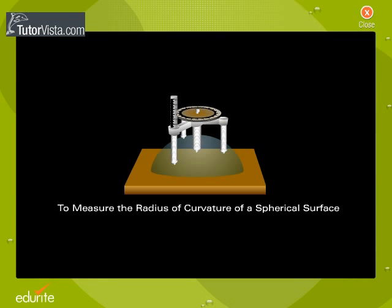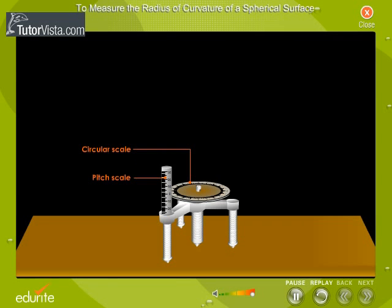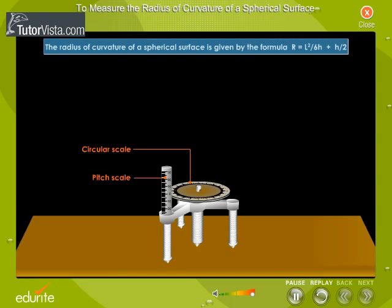To measure the radius of curvature of a spherical surface. Let us now find out how a spherometer is used to measure the radius of curvature of the given spherical surface. The radius of curvature of a spherical surface is given by the formula r is equal to l square by 6h plus h by 2.